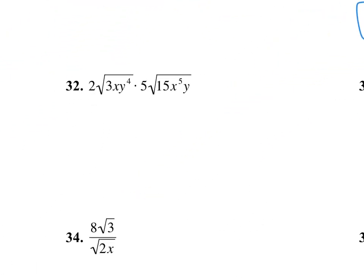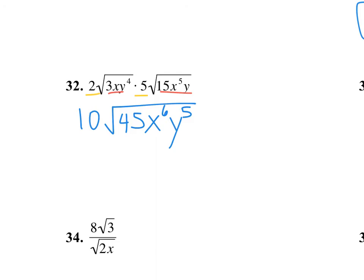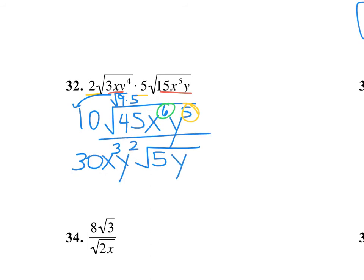Number 32: multiply the numbers on the outside together — 2 times 5 is 10. Multiply the numbers on the inside — 3 times 15 is 45. x to the 1st times x to the 5th gives x to the 6th, and y to the 4th times y is y to the 5th. Now simplify: 45 is 9 times 5. Take the square root of 9, which is 3, and bring it outside multiplied by 10. Leave 5 behind. 2 goes into 6 three times with no remainders. 2 goes into 5 two times with 1 remainder left.